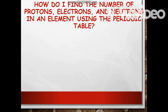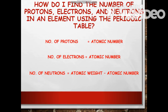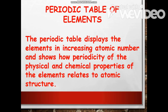How do you find the number of protons, electrons, and neutrons in an element using the periodic table? The number of protons is equivalent to the atomic number. The number of electrons is also equivalent to the atomic number. The number of neutrons is equal to the atomic weight minus the atomic number. The periodic table displays elements in increasing atomic number and shows how the periodicity of physical and chemical properties relates to atomic structure.